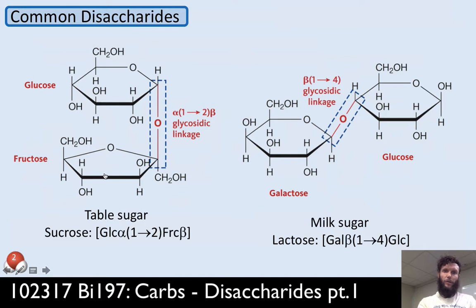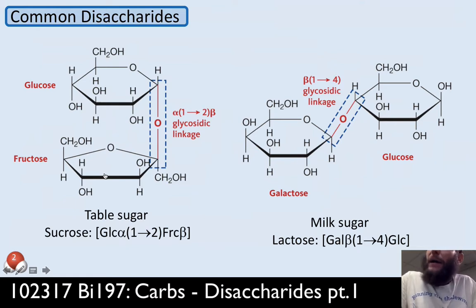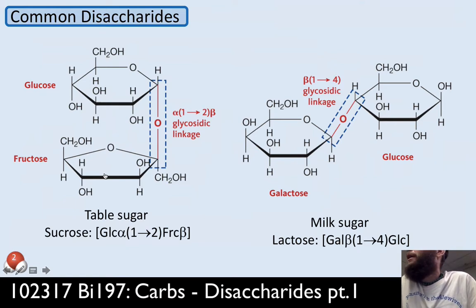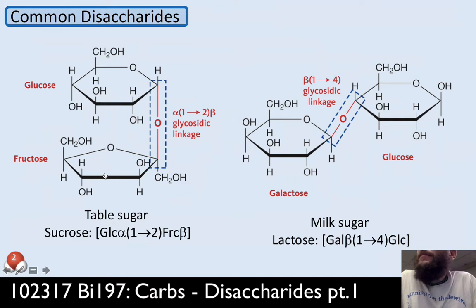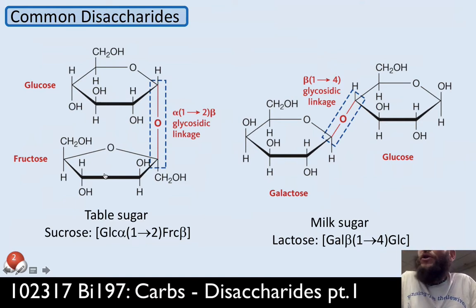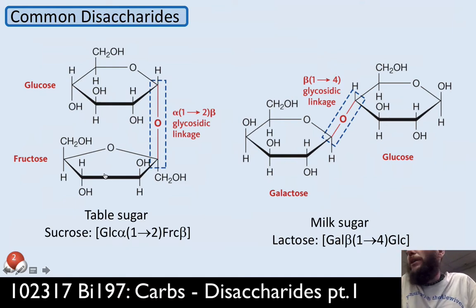Here are a couple of other common disaccharides. Maltose is the unit in starch. You eat the cellobiose linkage every day in large quantities. Maltose is part of starch; cellobiose is part of insoluble fiber.